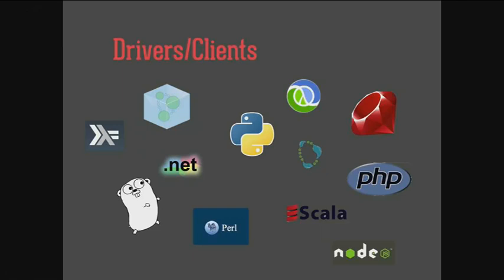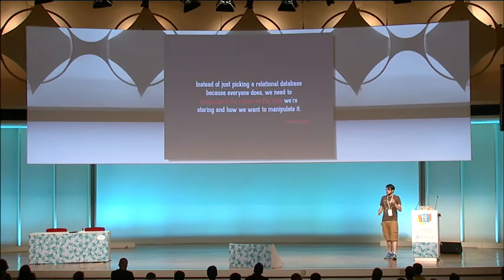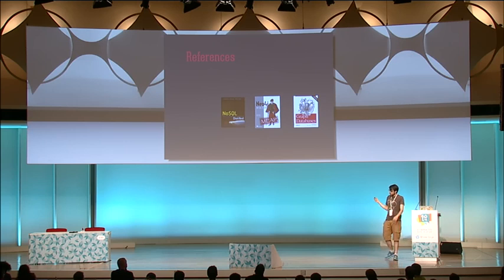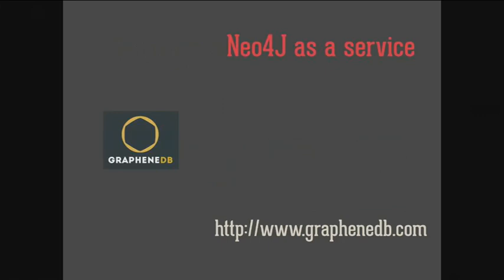My conclusion: I want to quote Martin Fowler. Instead of just picking a relational database or MongoDB because it's trending on Hacker News, we have to think about our data and what we need to do with it. We should tend toward polyglot persistence — having two, three, or five databases in our system. If you want to know more, I recommend three books: NoSQL Distilled by Martin Fowler, Neo4j in Action, and Graph Databases. Also, try GrapheneDB — Neo4j as a service — with free plans available.